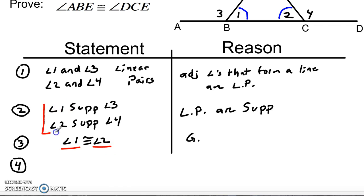But I also know that angle one and two are pairs of angles that both have supplements. One is supplementary to three, and two is supplementary to four. So that means that I can say that angle three is congruent to angle four. And the reason I can say this is because the supplements of congruent angles are congruent.